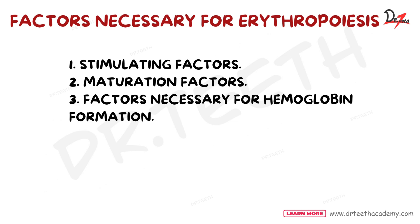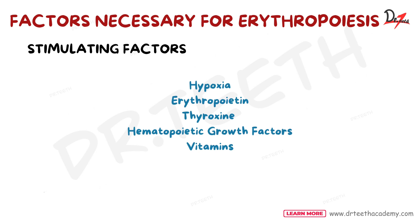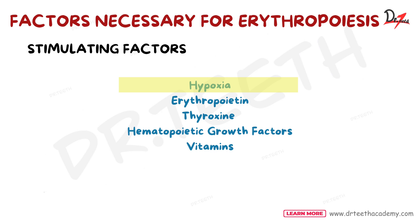Next we'll talk about the factors necessary for erythropoiesis. These can be classified into three categories: stimulating factors, maturation factors, and factors necessary for hemoglobin formation. The first stimulating factor is hypoxia — reduced availability of oxygen to the tissues. When tissues lack oxygen, the brain signals the kidney, which then releases erythropoietin, a hormone that stimulates erythropoiesis.